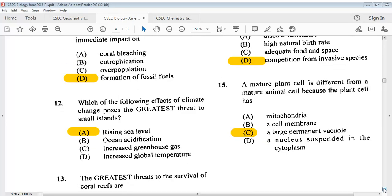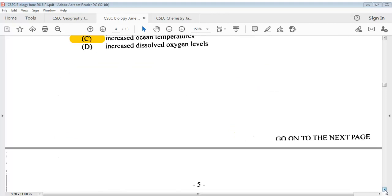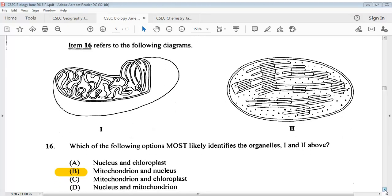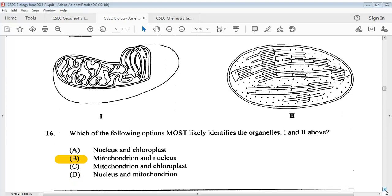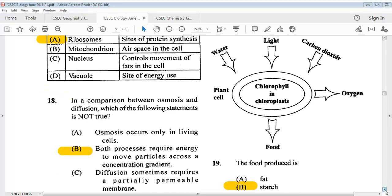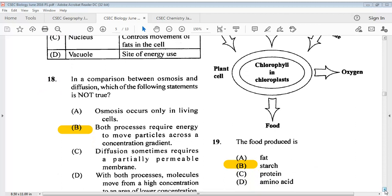Question 15, a mature plant cell is different from a mature animal cell because the plant cell has. The answer is C, a large vacuole. Item 16 refers to the following diagrams. You can take a look at the diagram. The answer for question 16 is B. The answer for question 17 is A. For number 18, in a comparison between osmosis and diffusion, which of the following statements is not true? The answer is B.